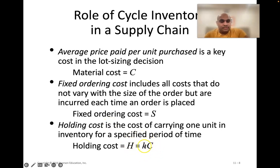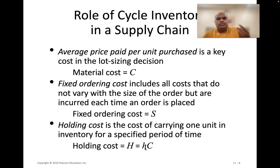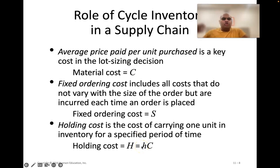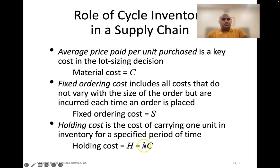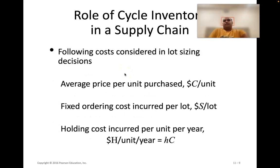Holding cost is usually written as a percentage of the material cost. For example, if you paid ten dollars for an item, a 10% holding cost means it costs one dollar to hold that item in inventory for a full year. This covers the interest on borrowed money used to finance inventory, plus warehouse rental, security, and electricity costs — all expressed as a percentage of the purchase cost.